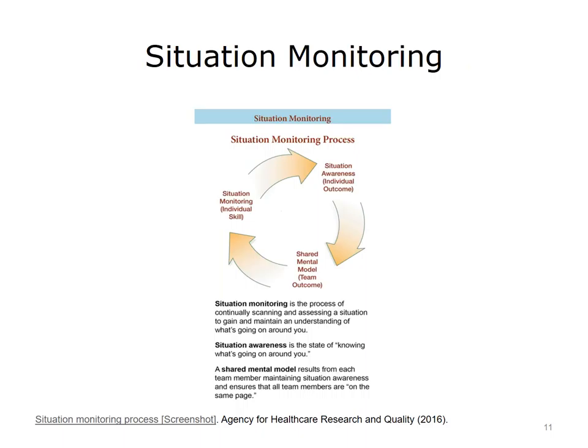According to the TeamSTEPPS site, "situation monitoring is a key component of the teamwork process and is intimately linked to the other three essential elements of teamwork. Because situation monitoring concerns the willingness and ability to continually monitor situations and share this awareness with fellow team members, it is enhanced by team leadership given that team leaders encourage and role model supportive behaviors. Situation monitoring allows mutual support through the ability to anticipate other team members' needs with accurate knowledge of their responsibilities. Situation monitoring is also moderated by communication, which allows for the sharing of new and emerging information to retain a shared mental model."